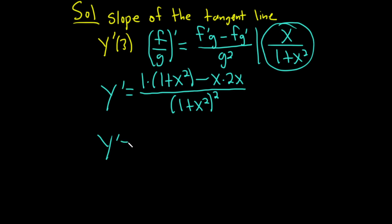So y prime equals—let's see—1 times all of this is just all of that, minus x times 2x, so it's going to be minus 2x², all over (1 + x²)².